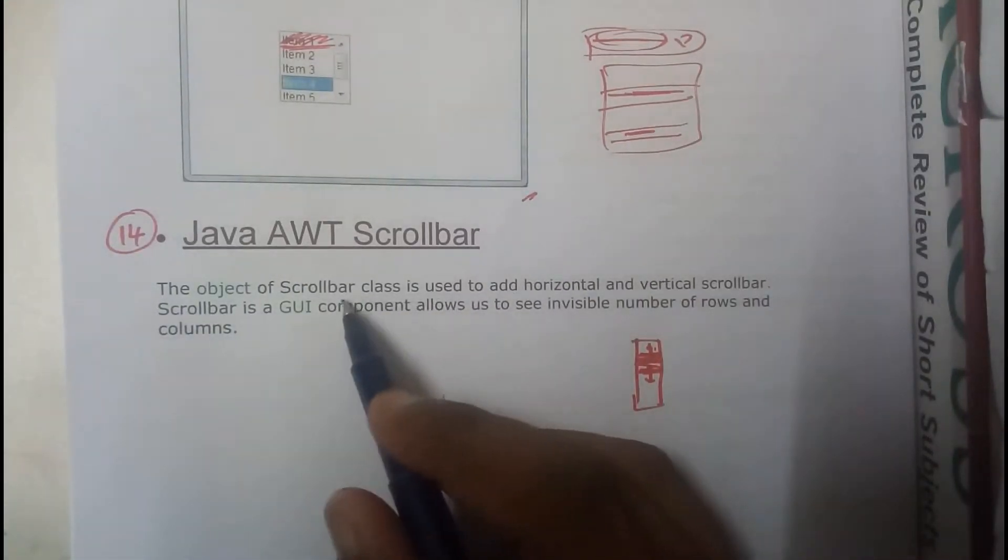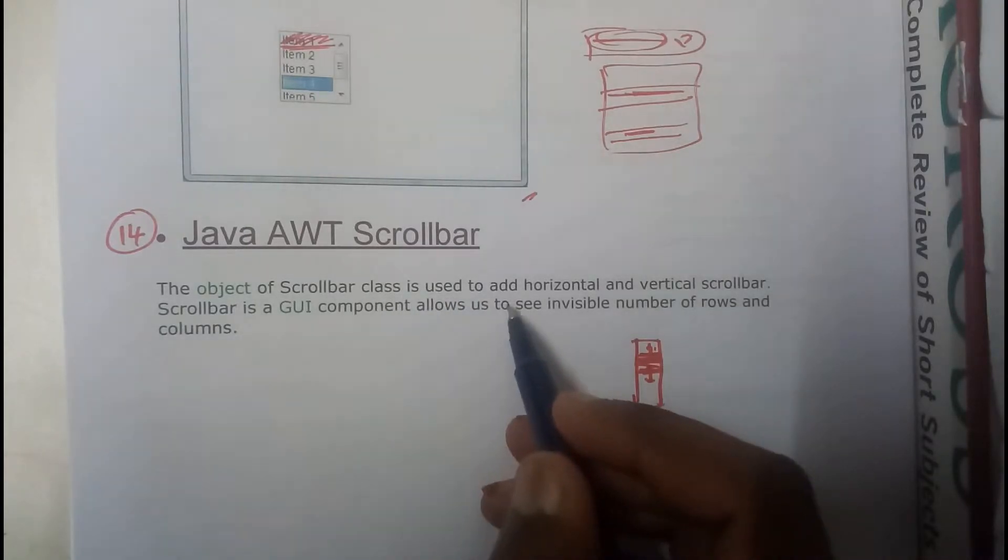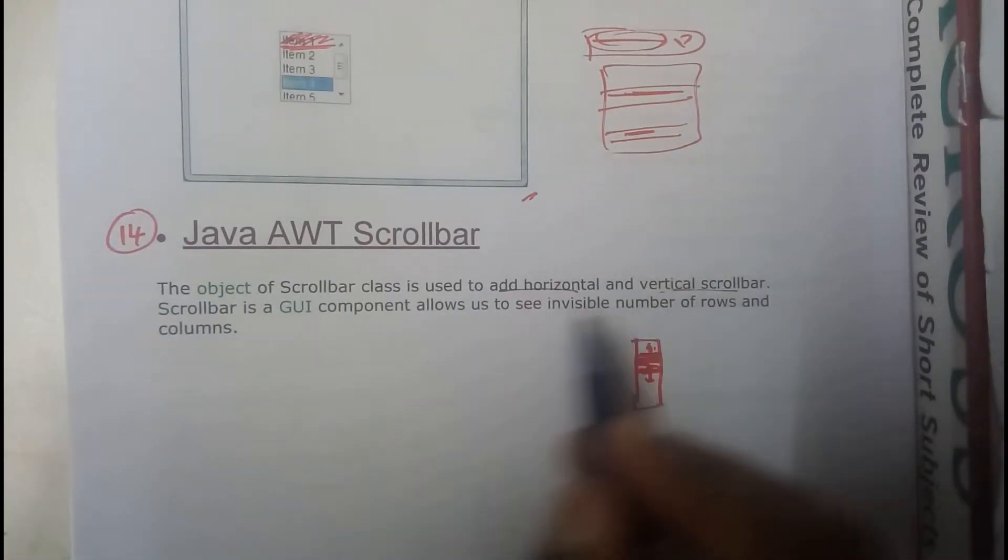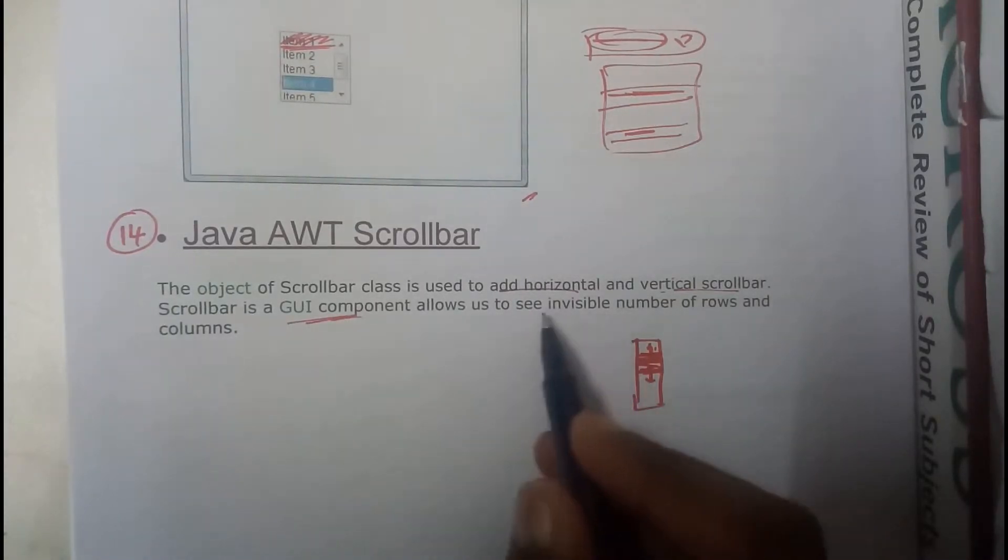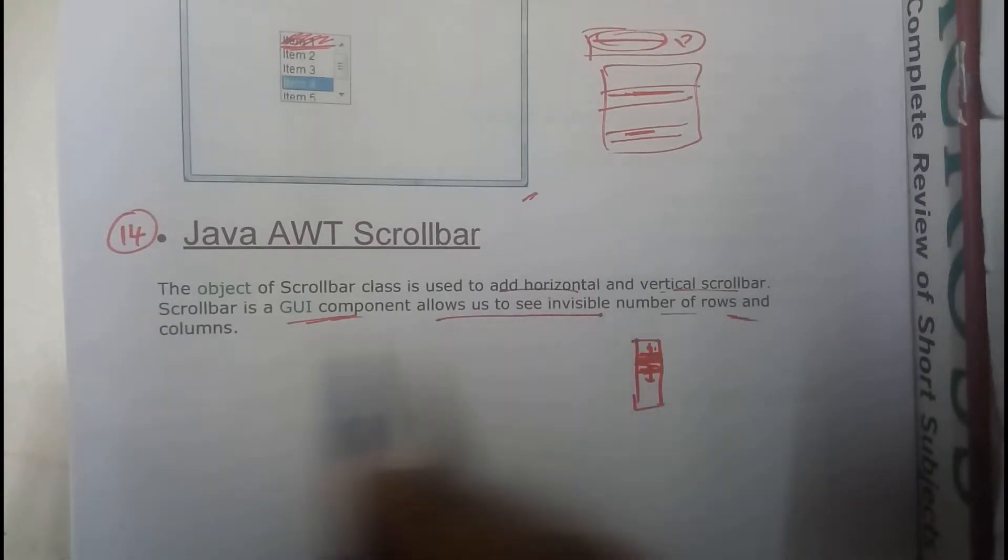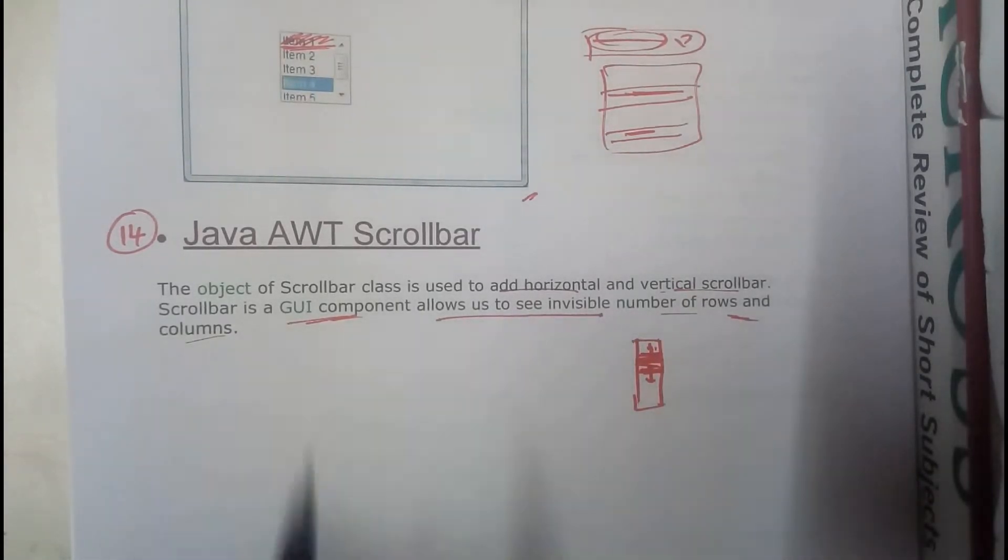The object of Scrollbar class is used to add horizontal or vertical scrollbars in a GUI component. It is visible. It allows us to see invisible number of rows and columns. Once we are going through the example you will have a clear idea, don't worry.